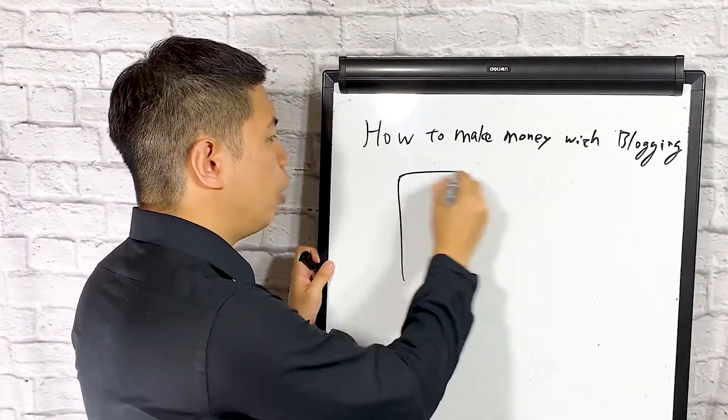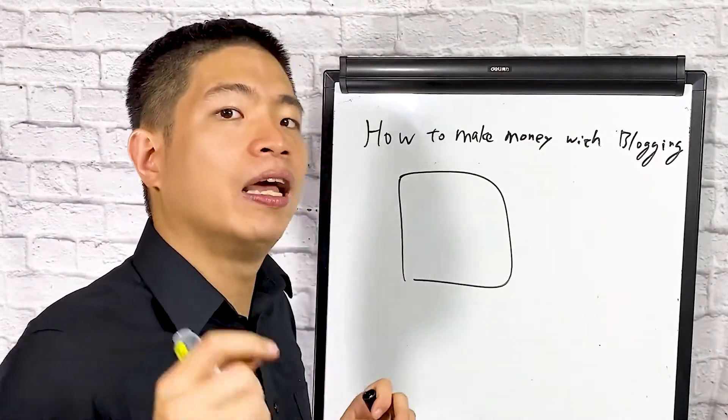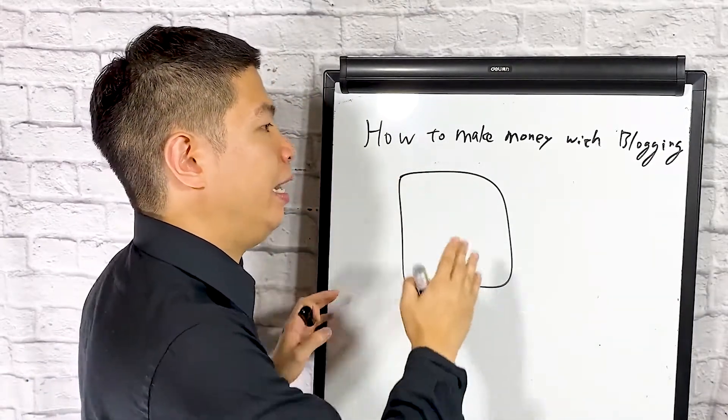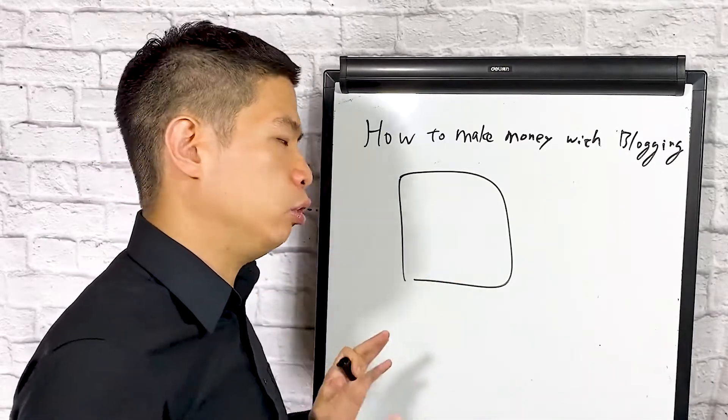This is how you make money with Google AdSense. Google AdSense will give you money if you get a click. So if you go to a website, they are trying to monetize with Google AdSense. That's what they're going to do.